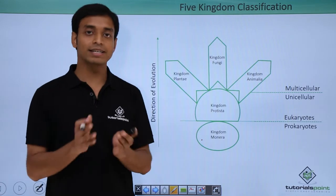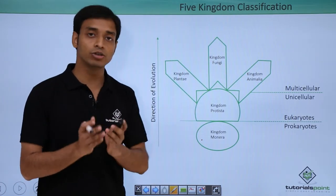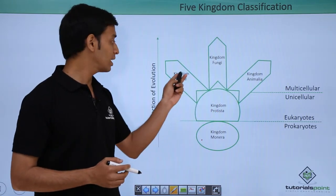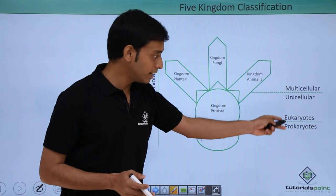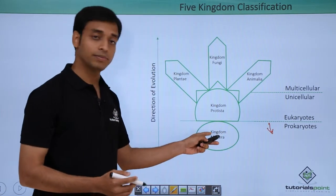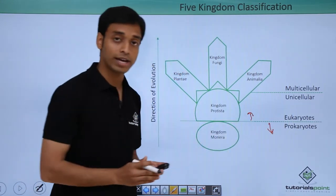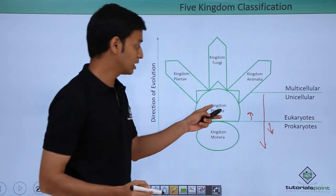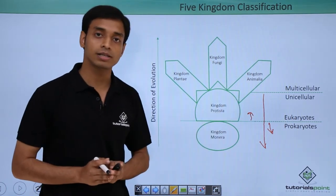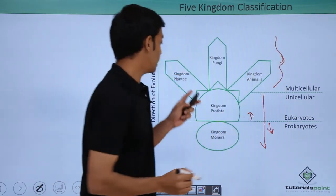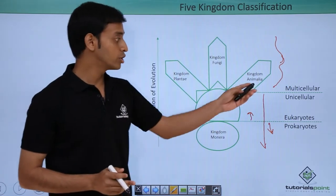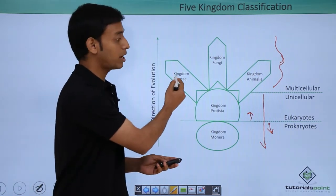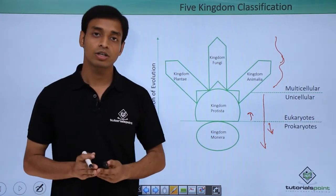Let us look at a schematic diagram of the five kingdom system. There are five kingdoms: Kingdom Monera, Kingdom Protista, Kingdom Animalia, Kingdom Fungi, and Kingdom Plantae. Kingdom Monera are the prokaryotes; all others above that line are eukaryotes. Kingdom Protista and Kingdom Monera are unicellular, while Kingdom Plantae, Kingdom Fungi, and Kingdom Animalia are multicellular. The direction of evolution runs from Monera toward Plantae, Fungi, and Animalia.